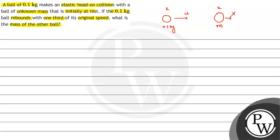Ball 1 collides with ball 2 and rebounds. Ball 2 now has some velocity v in this direction, and its mass is m. Ball 1 has a rebound velocity of u/3 in the opposite direction — taking this direction as positive, u/3 gets a negative sign — and its mass is 0.1 kg.